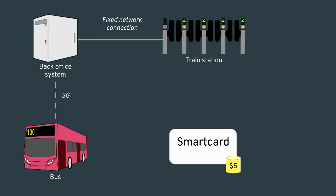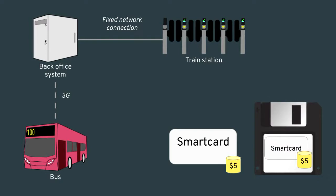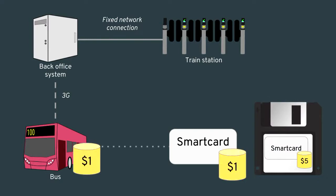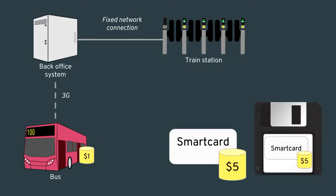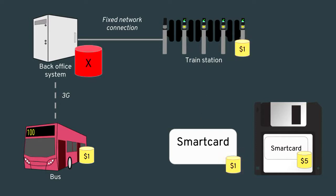Let's look at a simple fraud example with a replay attack. An adversary has a card with a balance of $5 and makes a backup. They board a bus costing $4 — that entry is added to the ledger and their balance is now $1. They then restore the backup, bringing the balance back to $5. They board a train, again $4. These transactions are eventually audited in the back-office, a conflict is detected, and the card ID is cancelled and added to a global block list.